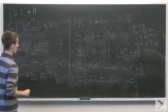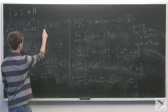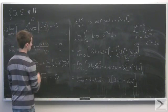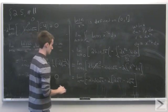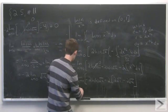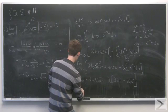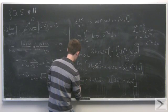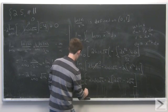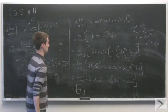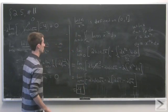So the entire first term goes to 0, and all we're left with is negative 4. This limit equals negative 4, which is the value of the improper integral from 0 to 1.